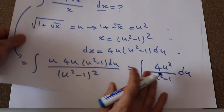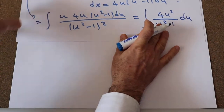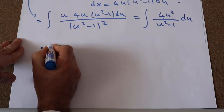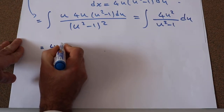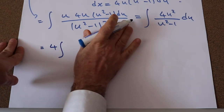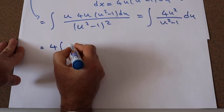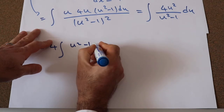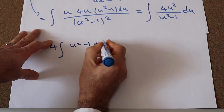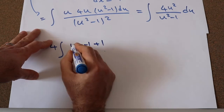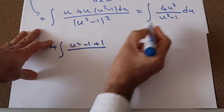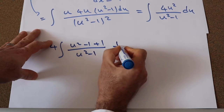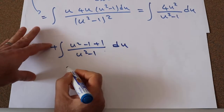So here, 4 is a constant, so I can take it out of the integral. Therefore, this one will be equal to 4 times the integral of u squared divided by (u squared minus 1) du. Here I subtract minus 1 plus 1, so u squared is again equal to u squared divided by (u squared minus 1) du.